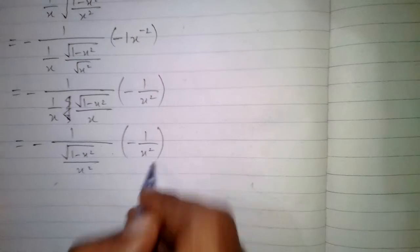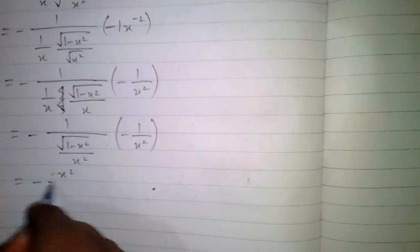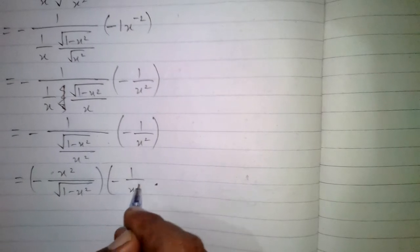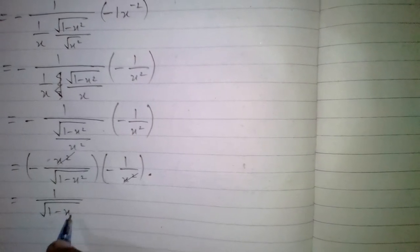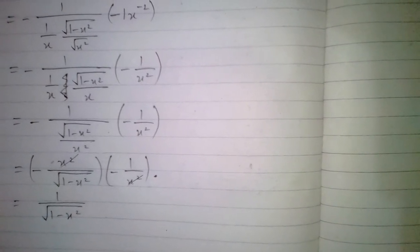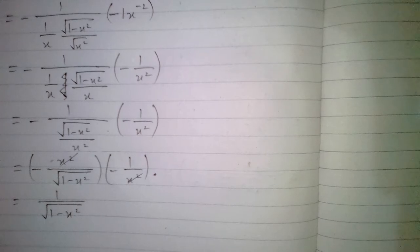We can write this as: (1 times √(1 − x²)) in the denominator, and x times x = x² in the denominator, with −1/x² from the derivative. This fraction simplifies to −x²/√(1 − x²) multiplied by −1/x². We cancel the x² terms, and minus times minus is plus, giving us 1/√(1 − x²). So the derivative of cosine inverse of 1/x is 1/√(1 − x²).